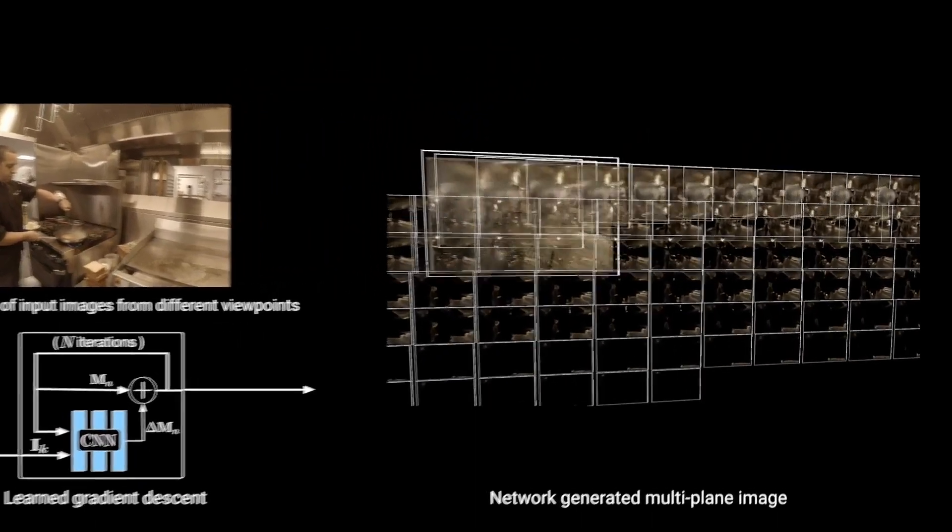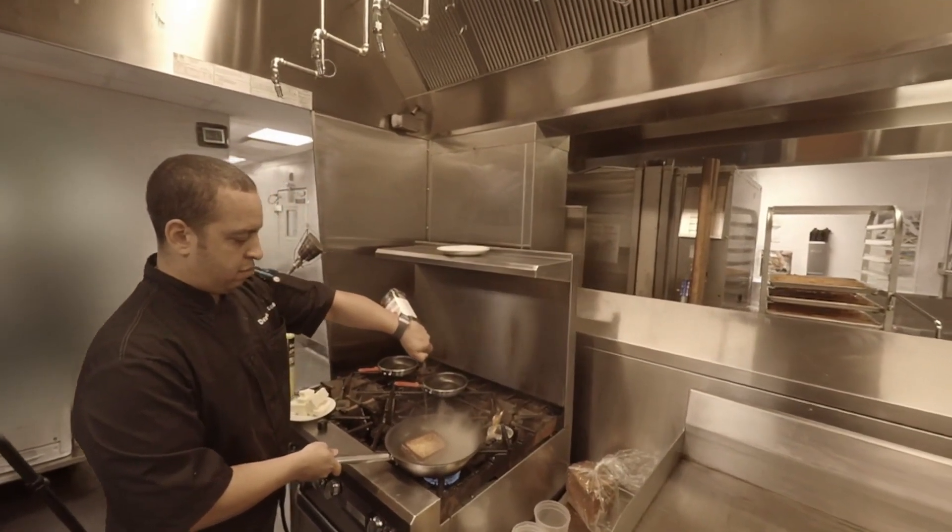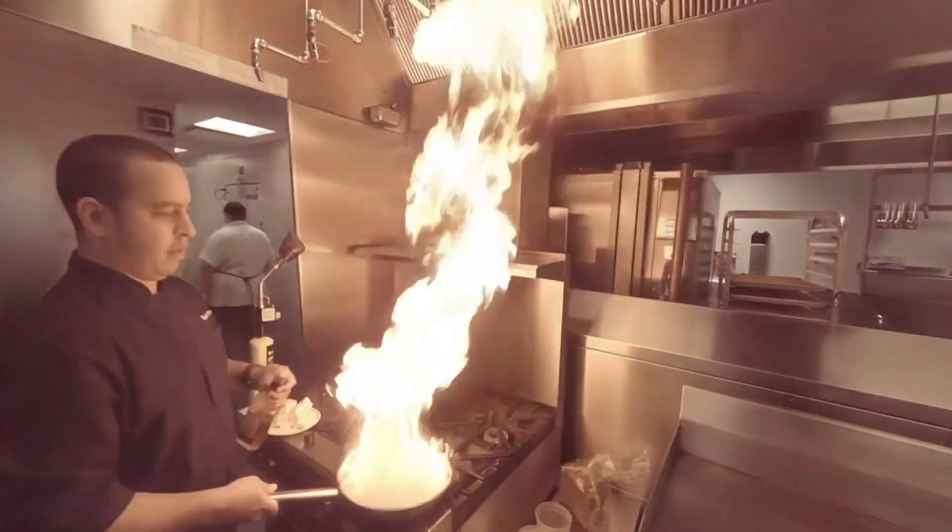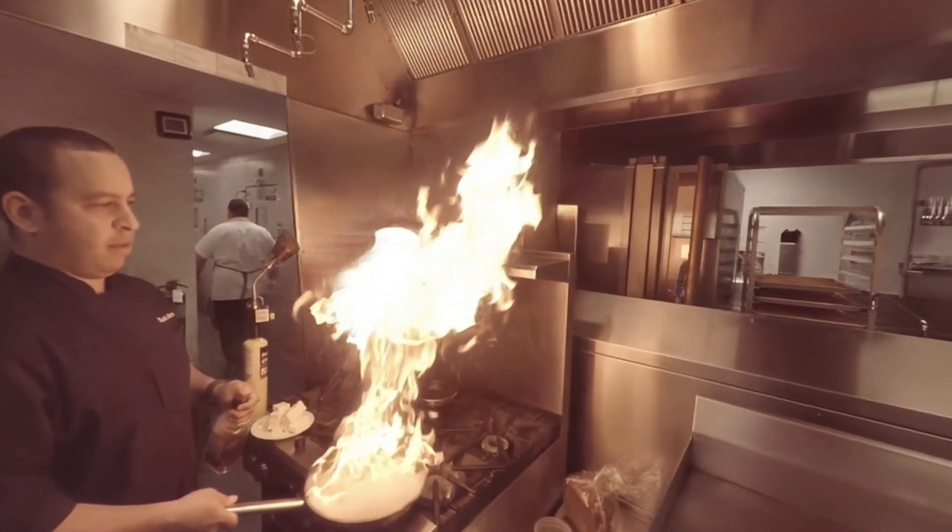A multi-plane image, or MPI, is a representation of a scene that allows real-time rendering to new viewpoints with standard graphics hardware. MPIs are a powerful representation that can model complex appearance effects, including transparency, reflections, and even volumetric effects, as shown here.